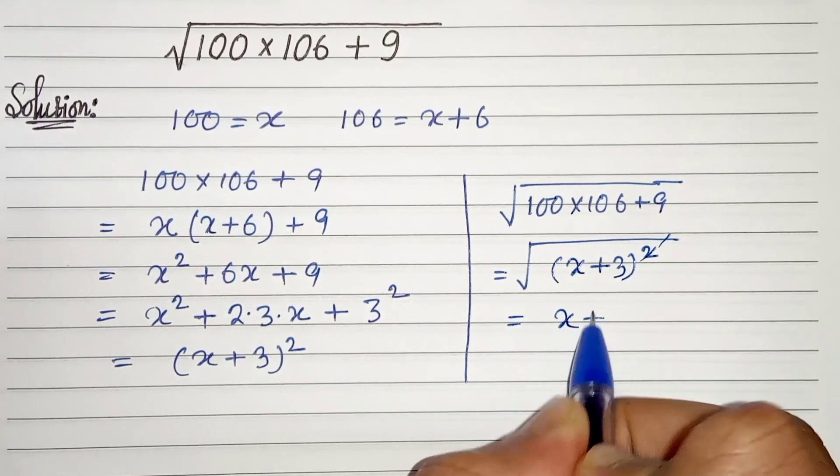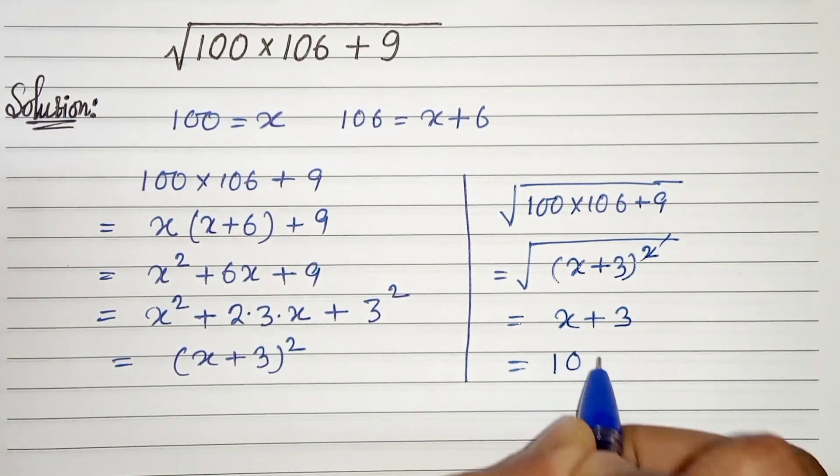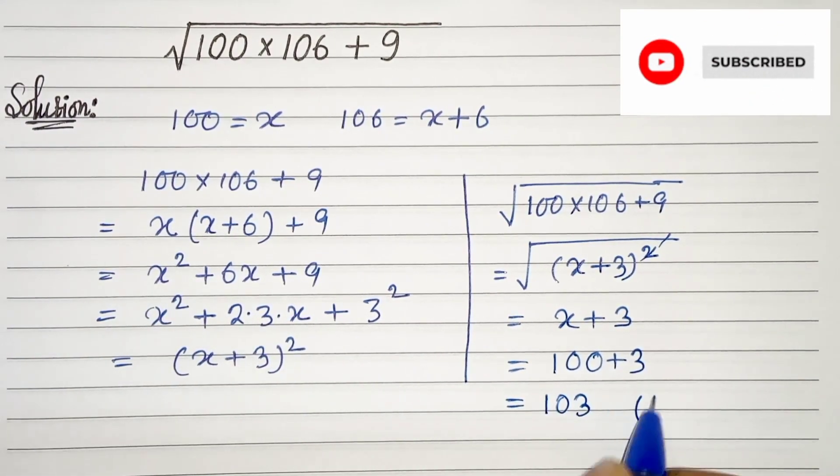So we will get x plus 3, and our x is 100. So we can write 100 plus 3, which is 103. This is our solution.